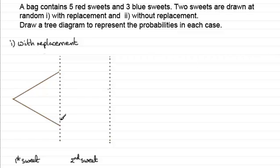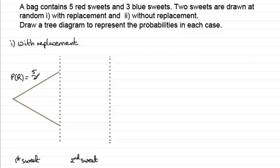When we've taken our first sweet, it's important to put the probabilities on each of these branches. So, the probability of taking a red sweet — P of red — is going to be five out of eight sweets. And the probability of drawing a blue sweet is going to be three out of eight. Notice how the two branches total one whole one — eight-eighths. On any section, your branches should total one.